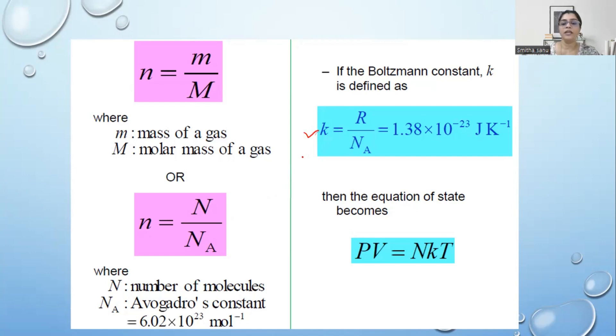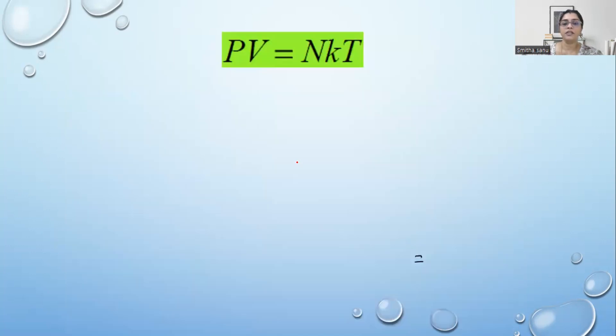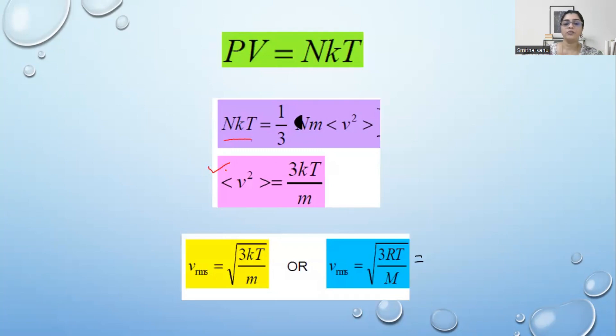PV equals nKT. Instead of nR you can replace it into nKT which are the variations. From the previous derivation if I retain PV on the other side and replace it to nKT, you can cancel the capital N on both sides. This is the first variation of average velocity square. Taking a square root, note down the variations. This is first, this is second, this is the third variation of the same formula. You can use any of those based on what is asked in exam.